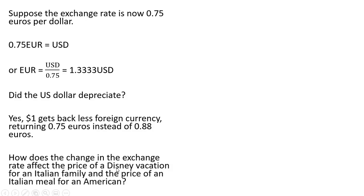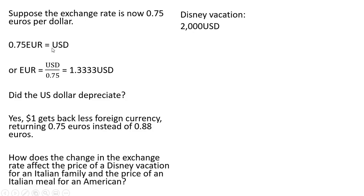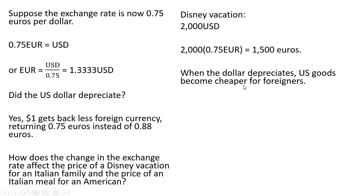How does the change in the exchange rate affect the price of a Disney vacation for an Italian family? The Disney vacation is 2,000 US dollars. We're going to plug in our new information based on the new exchange rate — for US dollar we put in 0.75 euro, making that substitution. We can see the Disney vacation is cheaper now for Italians, coming in at only 1,500 euros. When the dollar depreciates, US goods become cheaper for foreigners.